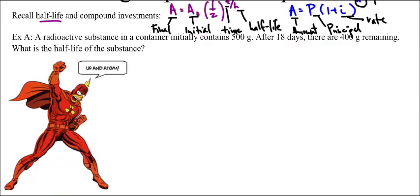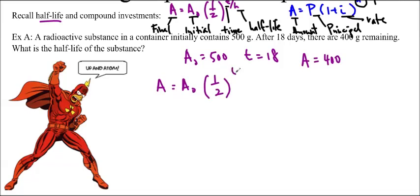Alright, so let's do an example. A radioactive substance in a container initially contains 500 grams. After 18 days, there are 400 grams remaining. What is the half-life of the substance? So the A-naught was 500. The time is 18. And the amount remaining afterwards is 400. So we're going to use our formula. Make sure you write the formula out. In the beginning, A equals A-naught, one-half to the t over h. And we're going to find the half-life. And just substitute these in. 400 is equal to 500 times one-half to the 18 over h.